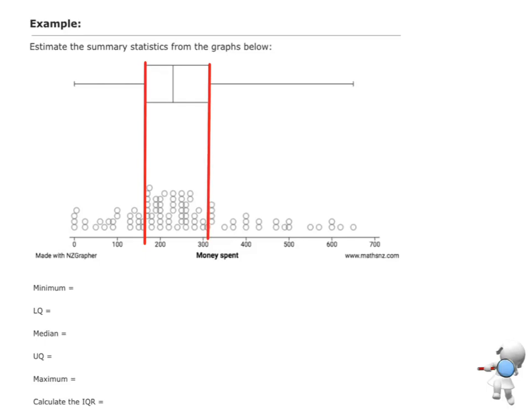That gives me values here. My lower quartile, that's going to be around about maybe 170, and my upper quartile there, maybe 310.